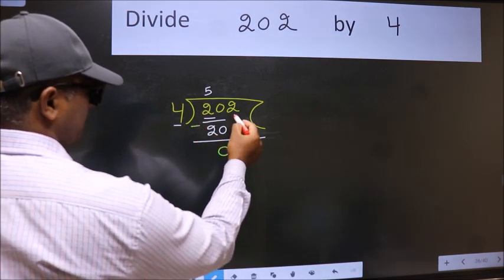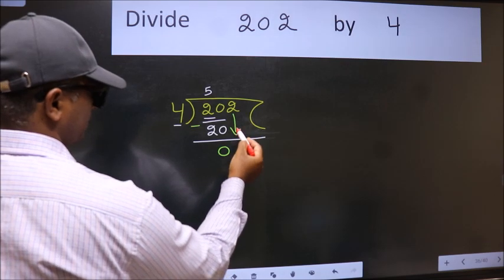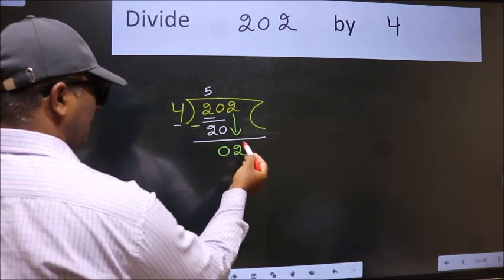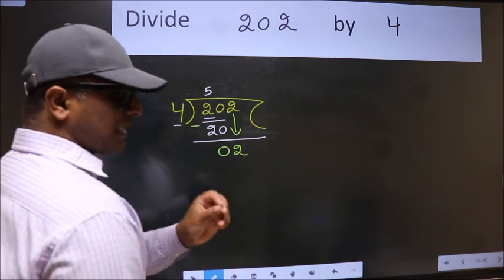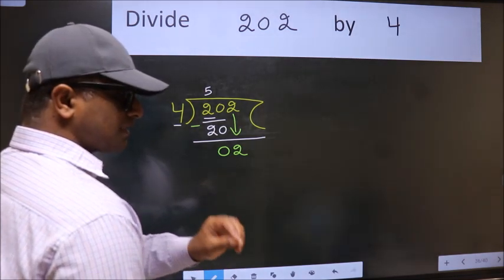After this, bring down the beside number. So 2 down. After this step, the mistake happens. And the mistake is this.